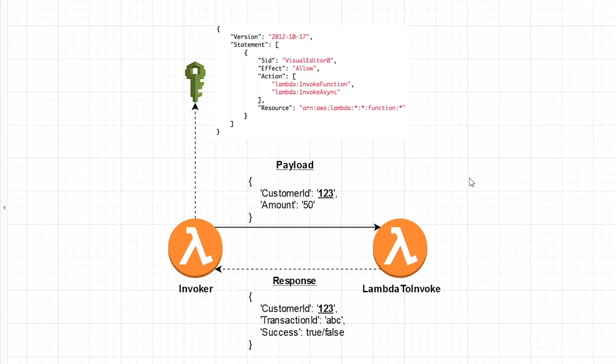Hello everyone, and welcome back to AWS Simplified. In today's video, I'm going to show you how to invoke a Lambda function from another Lambda function. I have an architecture diagram here just to explain what I'm doing and how this whole thing is going to work, so let's quickly walk through this so it makes sense when we get to the console.